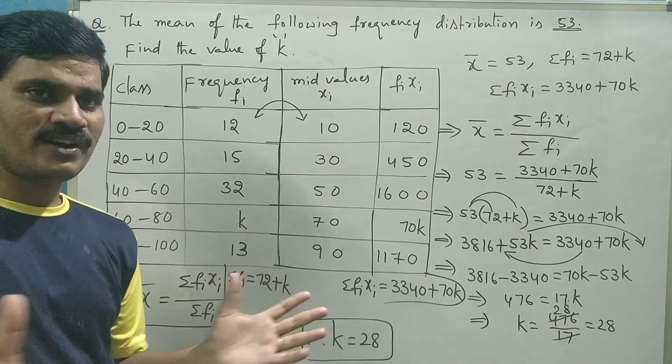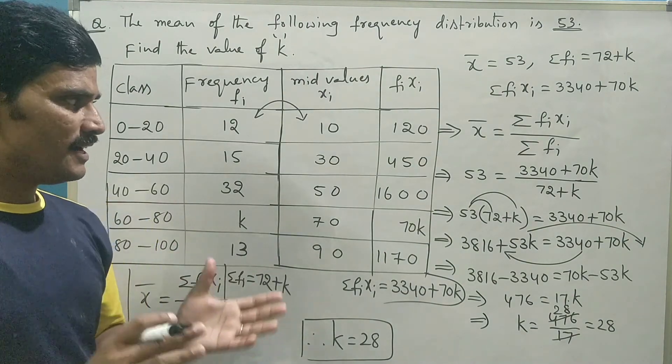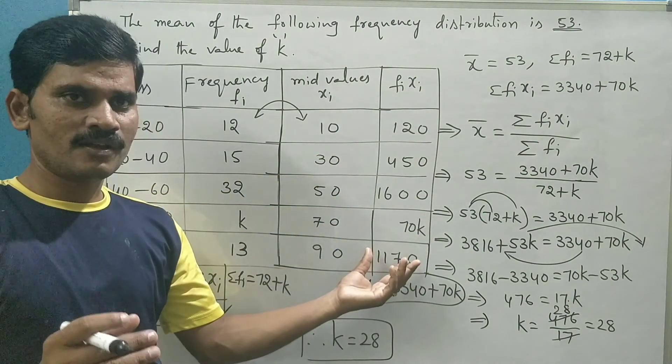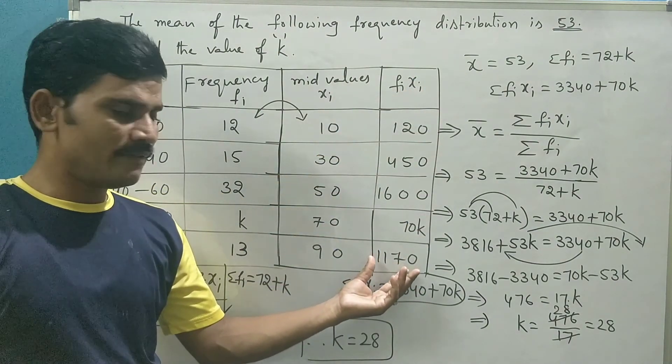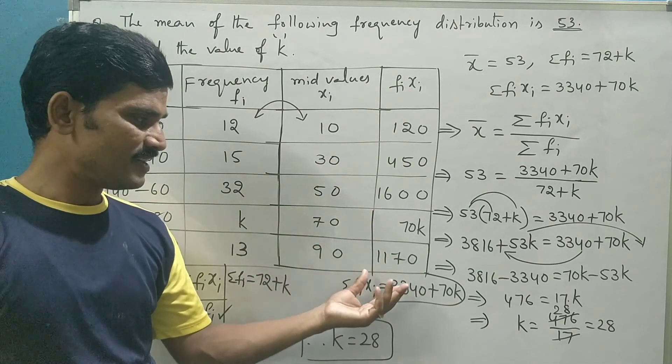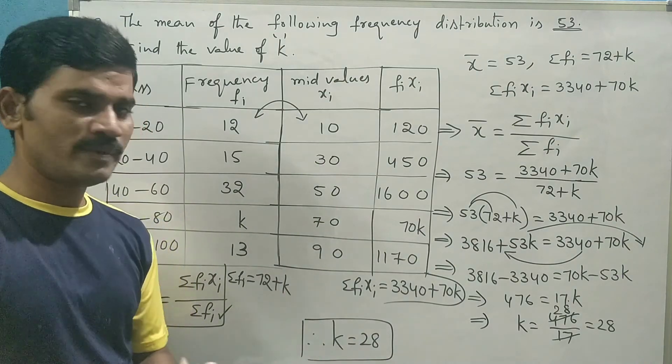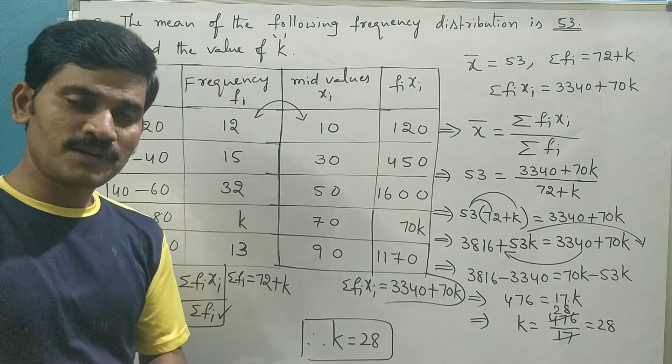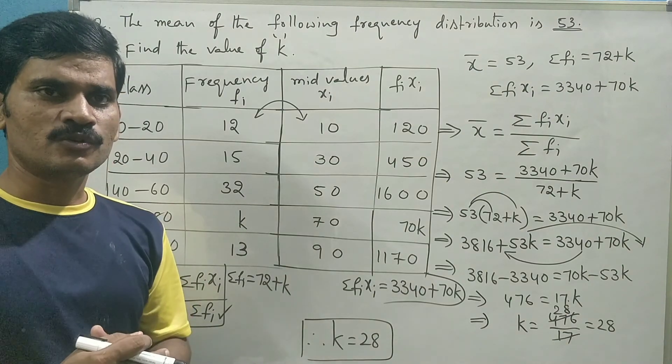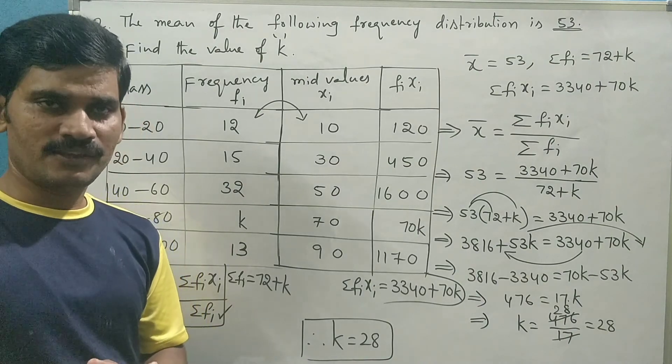See, what is the difference between direct method and step deviation method? In direct method, you would see the products are little bit bigger values. So fixi values become tedious and time consuming. So to avoid this time consuming, you can use step deviation method for the process to make it easy. Okay? I hope you understand. Thank you.